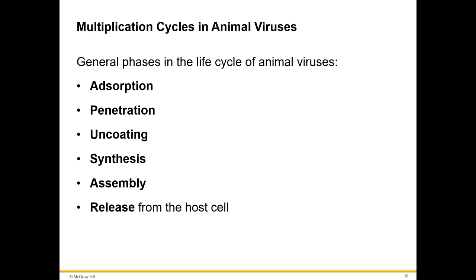Basically they're like the life cycle of the virus. The general phases in the life cycle of animal viruses — first, adsorption: adsorption is when the virus sticks to the surface of the host cell. It has to be the correct host cell with the correct receptors; it won't be able to stick if the spikes do not recognize the receptor on the surface of the host cell.